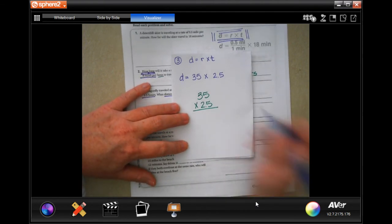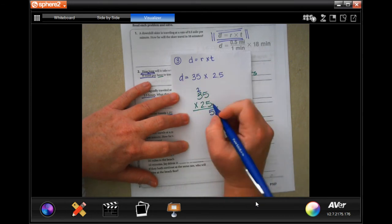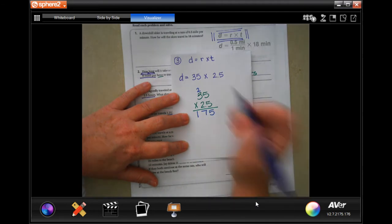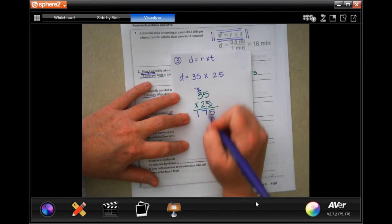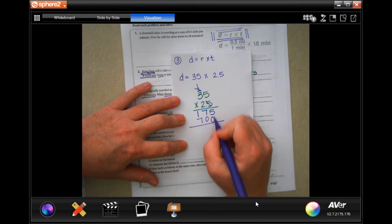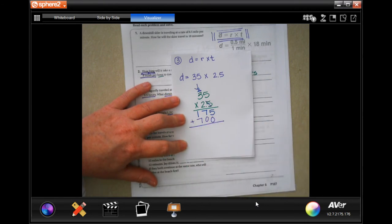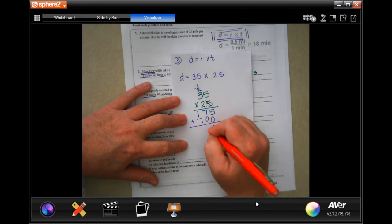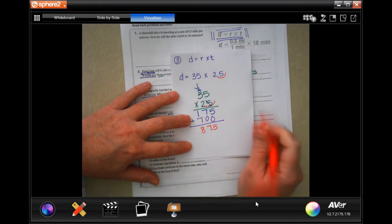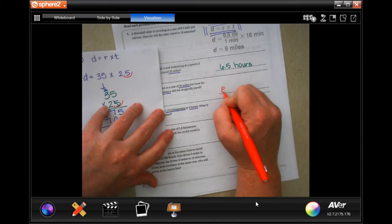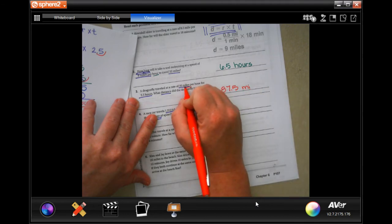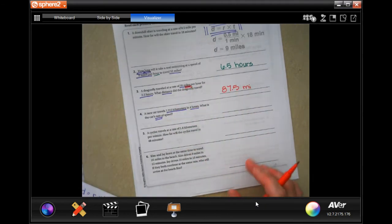So, 5 times 5 is 25. Carry the 2. 5 times 3 is 15, plus 2 is 17. We're going to go through, and tic-tac-toe. 2 times 5 is 10. Carry the 1. 2 times 3 is 6, plus 1 more is 7. So, we're going to go and add them. 5 plus 0, 5. 7 plus 0, 7. 1 plus 7, 8. We need to go in one time for that decimal. So, 87.5, and it's talking about miles.